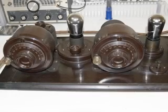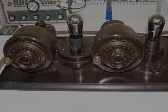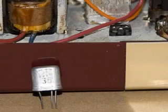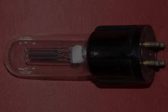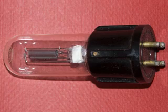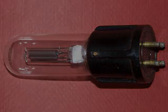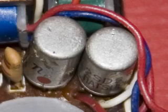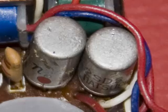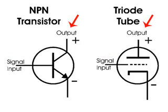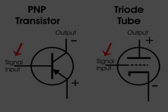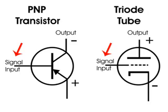Now, the biggest difference, besides the filament for the tube, the biggest difference between transistors and tubes is transistors require much less voltage to function than do tubes. However, the functionality of a transistor and a tube is very similar.